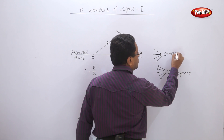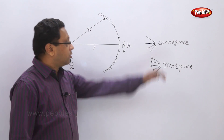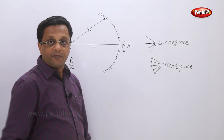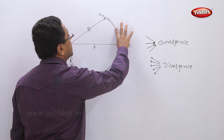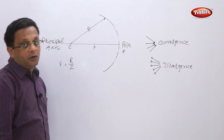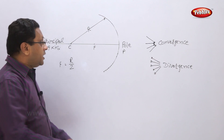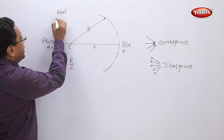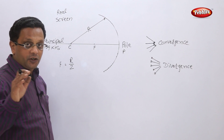Your concave mirrors are converging mirrors, whereas your convex mirrors are diverging. In case of a converging mirror — the concave mirror — you always get a real image. This image can be taken on a screen because it is a real image; the rays are actually converging.